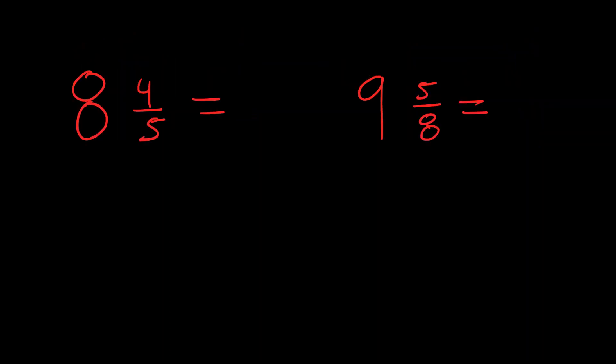Now we have eight and four-fifths. Same concept applies. We're going to multiply the eight times five. That's 40 plus four, that's 44. So now we have 44, keeping the denominator the same, it's going to be five.